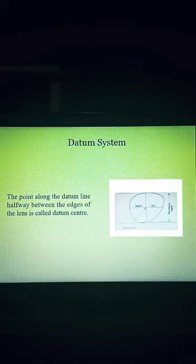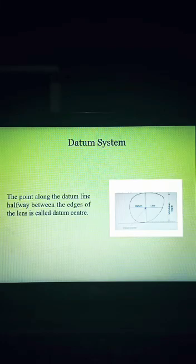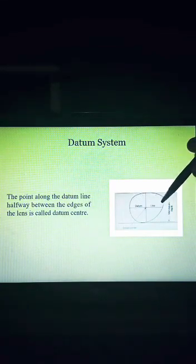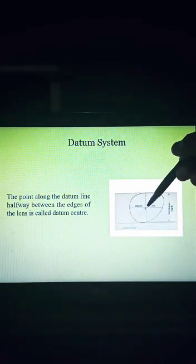Next, the point along the datum line halfway between the edges of the lens is called the datum center. The center point of the datum line, this is the datum line and this is the center of the datum line.